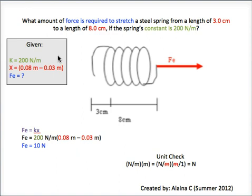K, which is the spring constant which measures how easily an object may be stretched or compressed, is 200 N per meter.